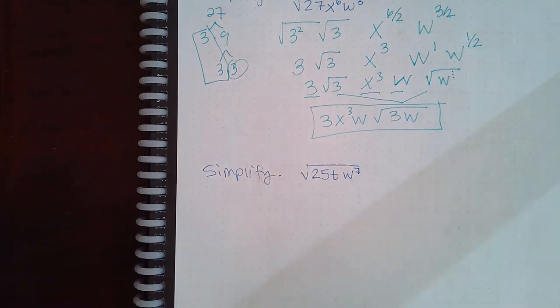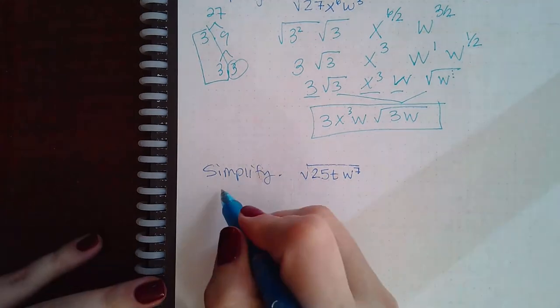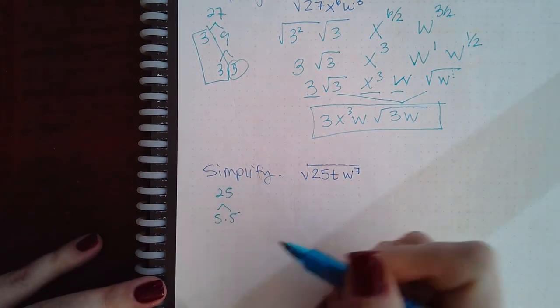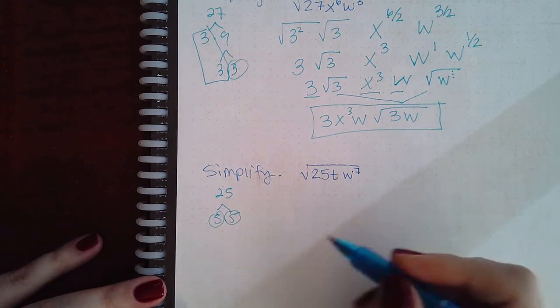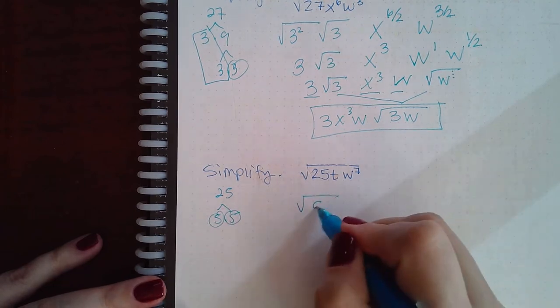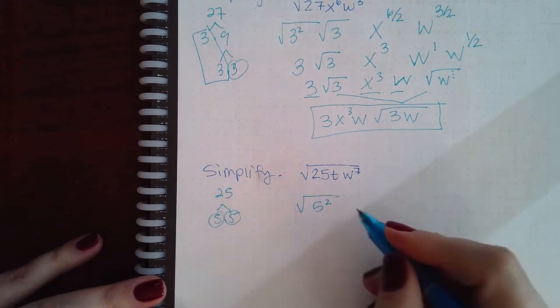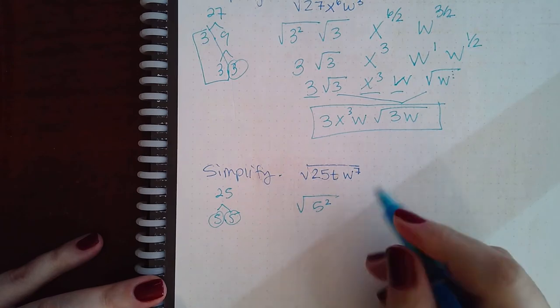Okay, similarly we can do it for this problem. So 25 is 5 times 5, and those are both prime, so we do have that pair 5². There's nothing else to be included in the square root, so that's it for the number.